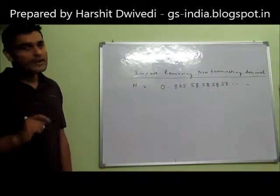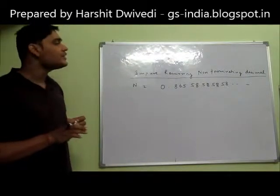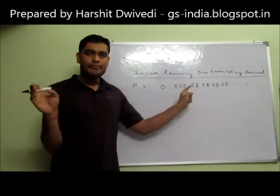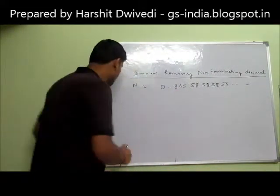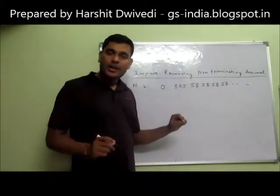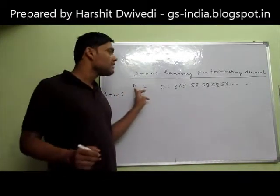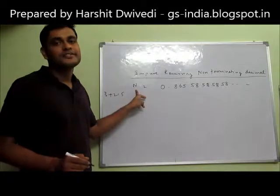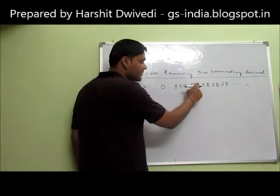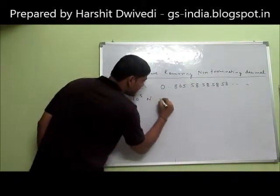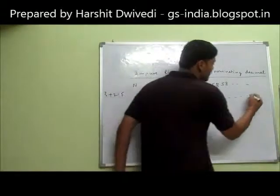The very first step is to count the lag — that is, before the digits have started repeating themselves (5858...), how many digits are there which are not repeating? They are 8, 6, 5 — that is 3 digits. After this, how many digits are repeating? They are 5 and 8 — so 2 digits. So total is 3 plus 2 equals 5. I will multiply this number by 10 to the power 5. At the right hand side it will become ...865585858 so on. This I will mark as equation number 1.